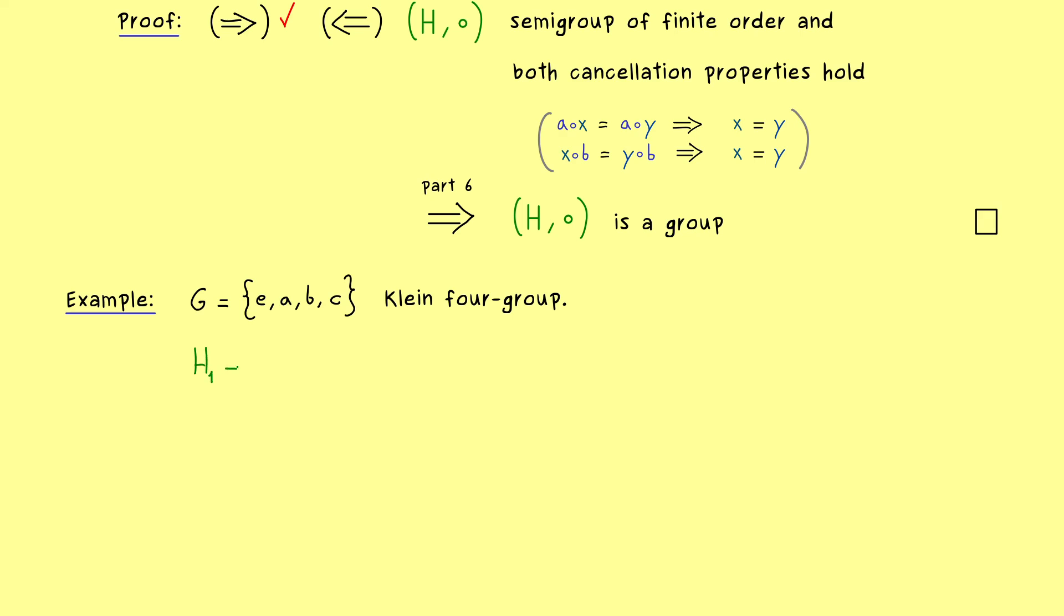Indeed, we know this is always a subgroup of every group. Therefore, more interesting would be one with two elements. And in fact, we see that if we take E and A, we have a subgroup as well. We can check that with the proposition above, because we cannot leave the set H2 with the binary operation, because A with A brings us to E again. And this implies that we can also take B or C instead of A here. In other words, we get two more subgroups.